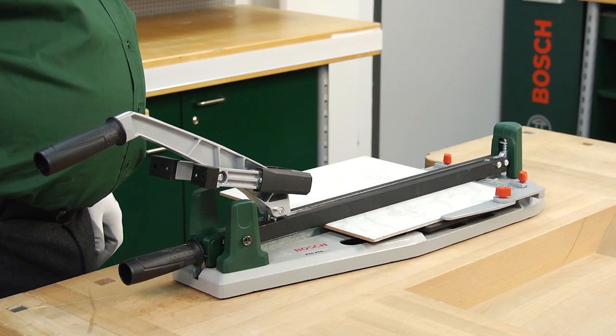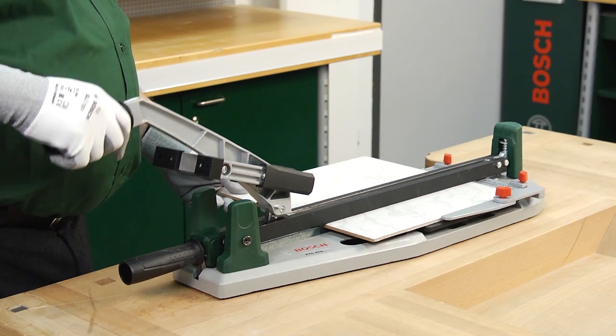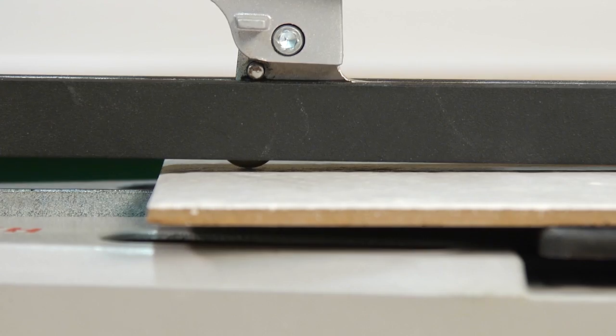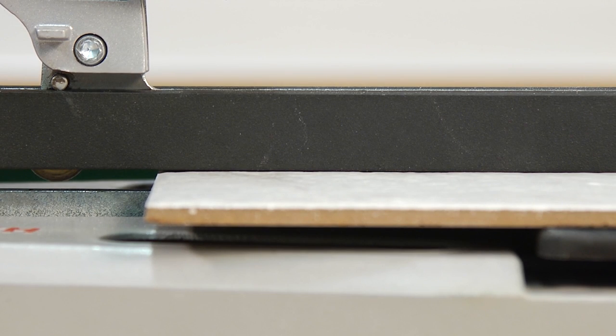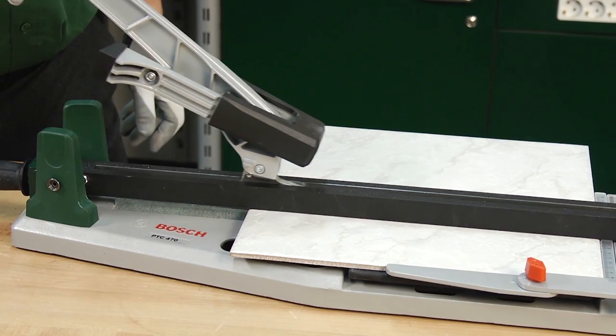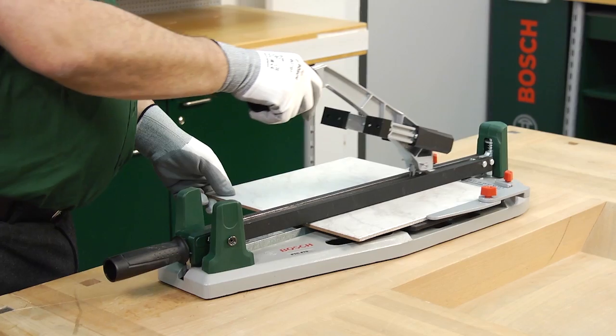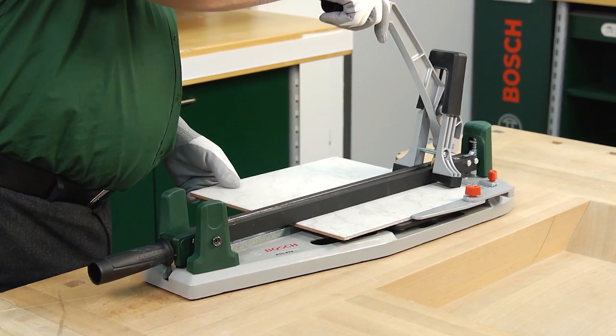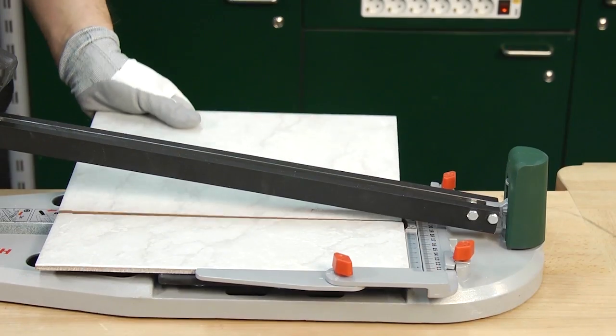Then the actual cutting begins. To ensure a clean start, the cutting wheel is applied slightly behind the tile edge and is pulled forwards over the tile. Then you slide the cutting wheel over the entire tile, applying light pressure to it as you do so. At the end of the cut, you can safely and easily break the tile, all in one step.